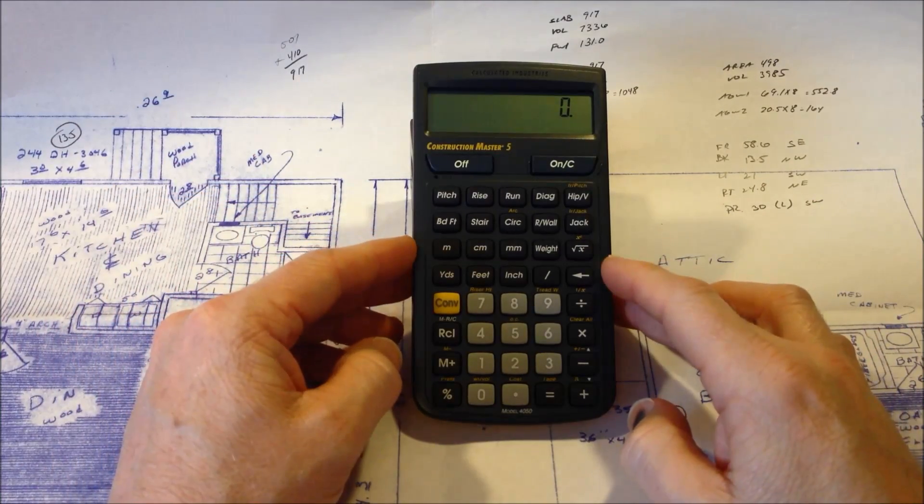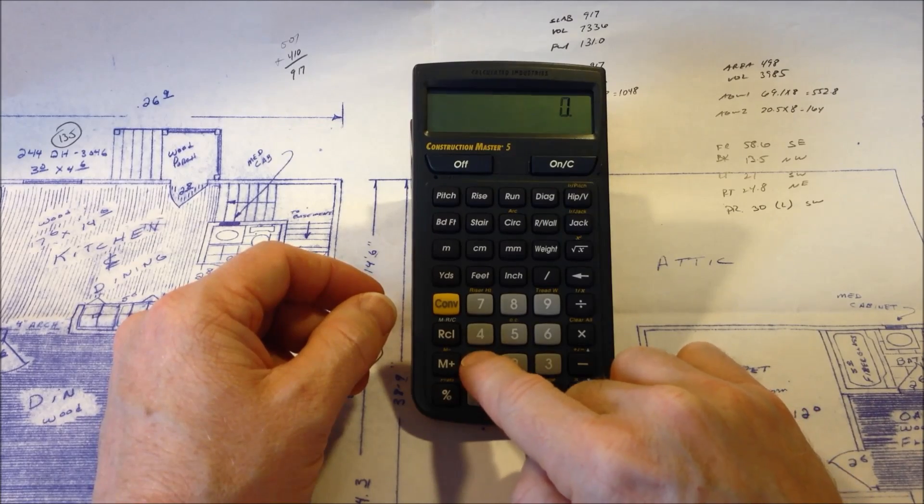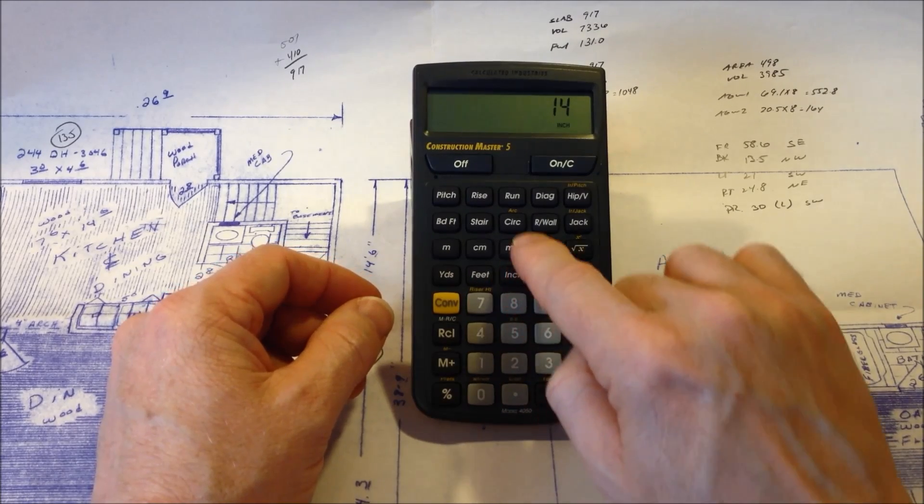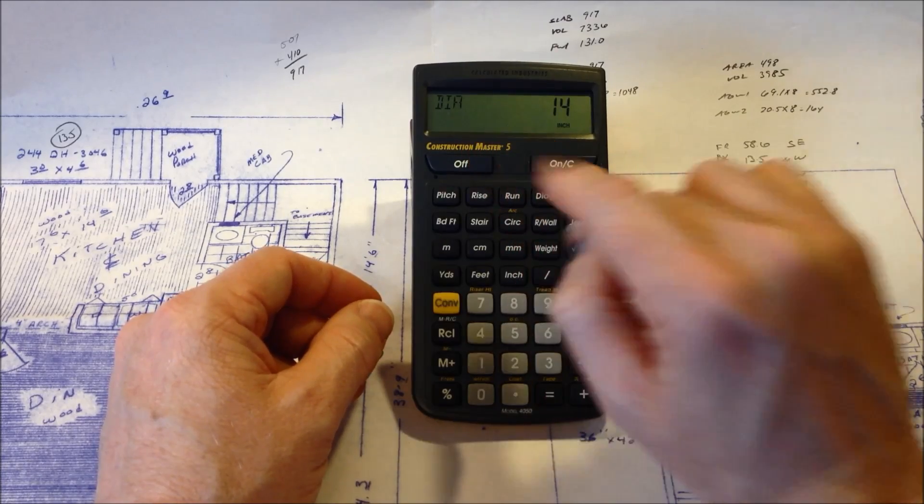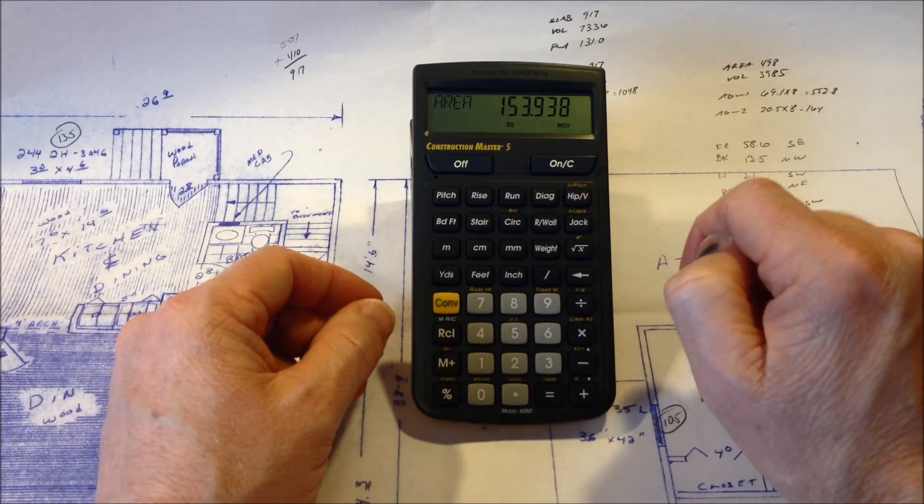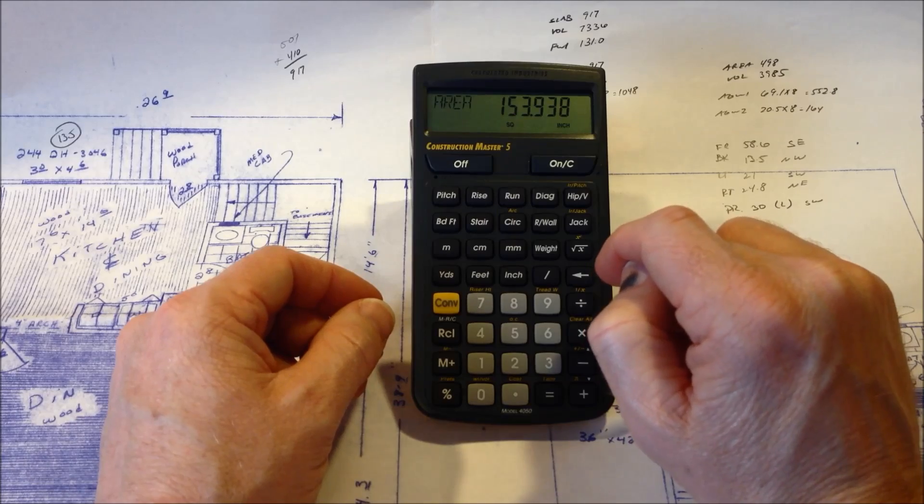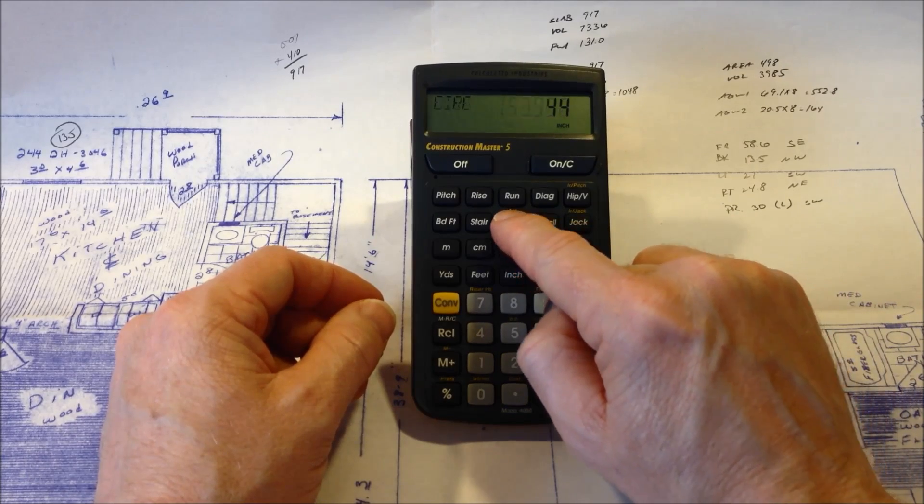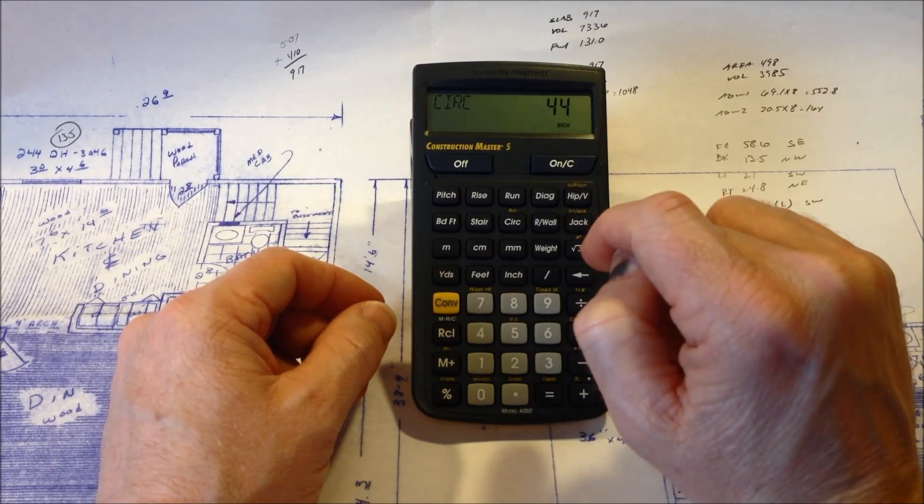Another nice function that this calculator will do is the circular function. So we can take, say, a 14-inch circle and we hit the circ button. And it tells us, OK, we're going to call that the diameter. When we hit circ again, it tells us the area of that circle is 153.9 square inches. And if we hit circ again, it gives us the circumference, which is 44 inches.